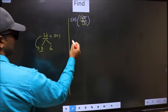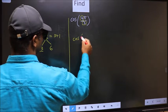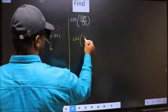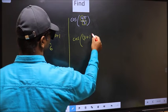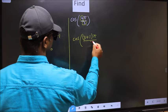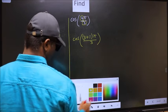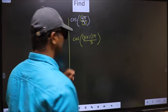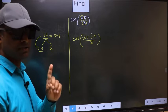So this will become cos. In place of 4, now you write 3 plus 1, π by 3. This is your step 1.